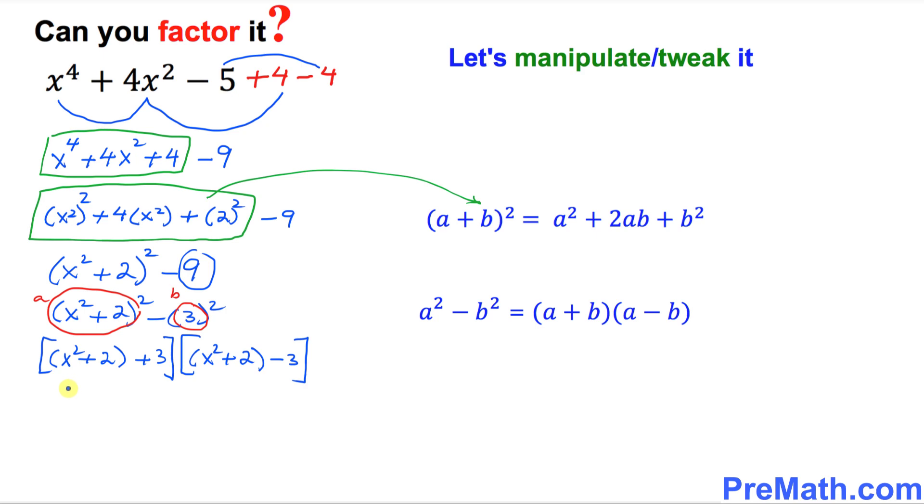So far so good. Let's simplify this a little bit. Open up these parentheses. I can write this x square plus 2 plus 3 times x square plus 2 minus 3. Let's simplify. Combine the like terms. I got x square plus 5 times x square minus 1.